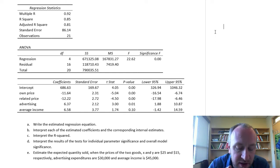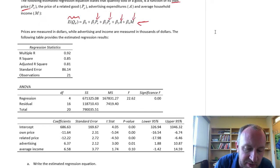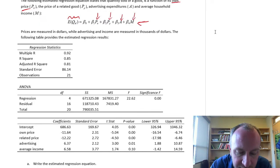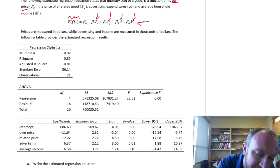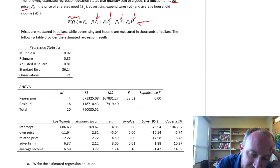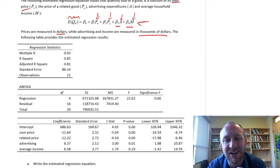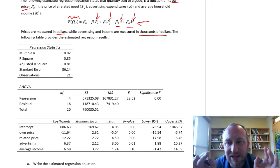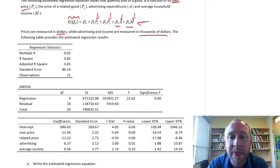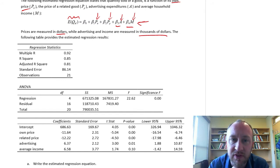We have our demand equation with all of our variables listed. All of the prices are measured in dollars, while advertising and income are measured in thousands of dollars. It's always really important to remember those units of measurement, because that affects your interpretation of the coefficients.